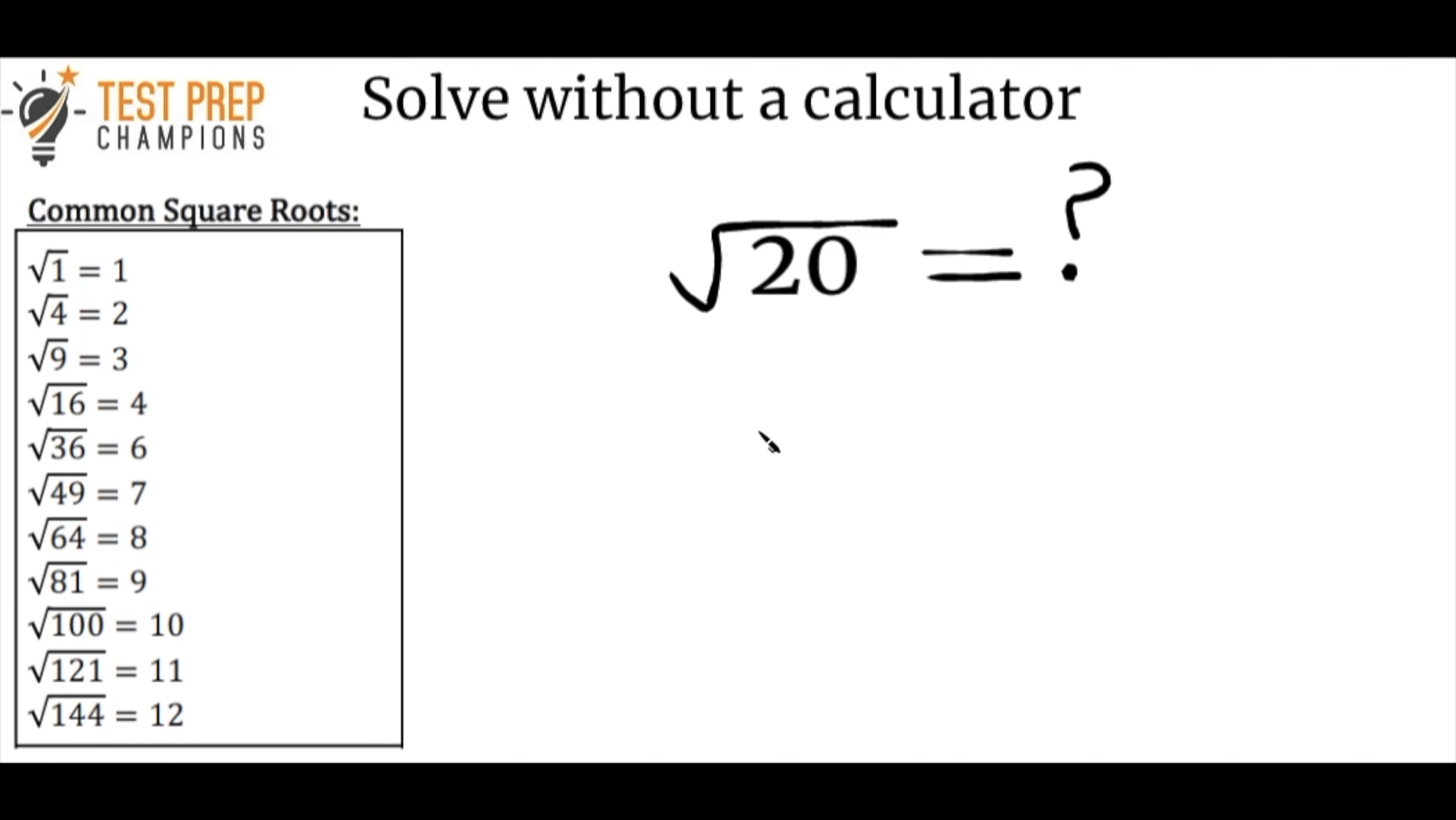So what we want to do is we want to think of numbers that will multiply together to give us 20. So let's think of pairs here. So I know that 20 times 1 is going to give us 20. So we'll use 20 and 1. And I also know that 10 and 2 will multiply together to give us 20. Can you think of any other pairs here? What about 4 and 5?